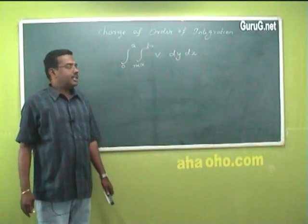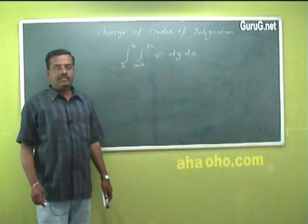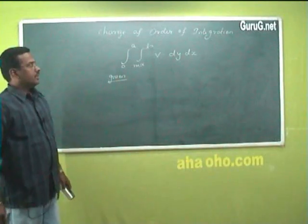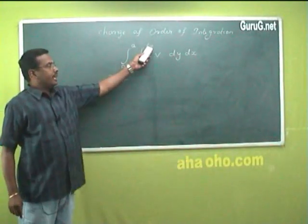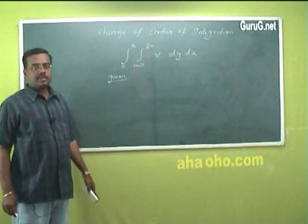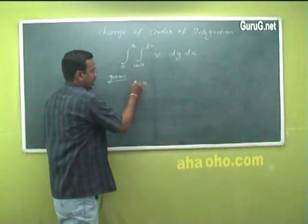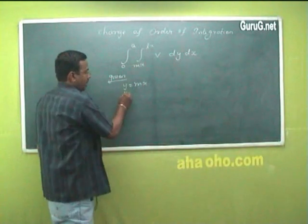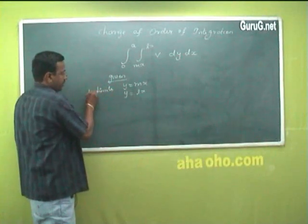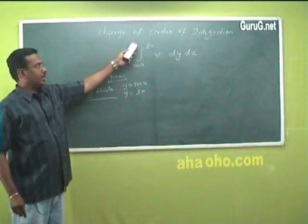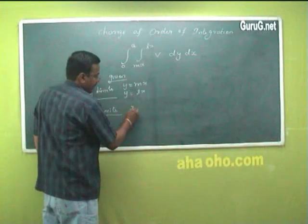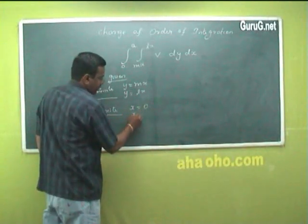Before passing on to the change of order of integration, let us see the given order of integration. Here, mx and lx are limits. Since x limits cannot be expressed in terms of x, mx is a y limit. Therefore, y = mx and y = lx are the y limits. The remaining 0 to a is the x limit, that is x = 0 and x = a.